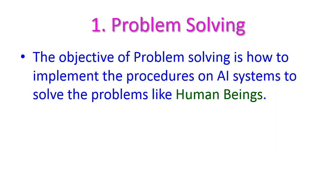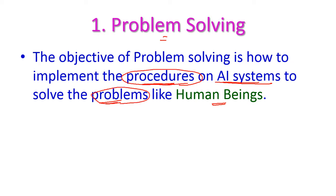The first one is problem solving. Problem solving means to implement the procedures on an AI system to solve a particular problem like a human being. That means we have to develop a procedure to solve a problem exactly like how the human being will solve the problem. So this is problem solving.